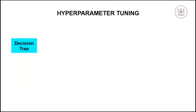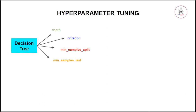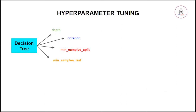Let's consider the decision tree and its parameters — there are many, but here we consider four. The first is max depth, the maximum depth the decision tree should have, which can be any value. Then you have criterion, which can be either Gini or entropy. Then minimum samples split — the minimum number of samples that should be in a node for any further split.